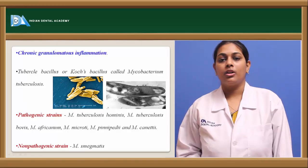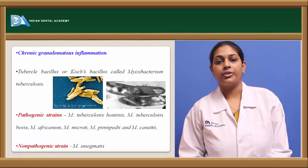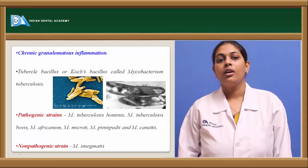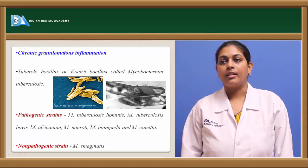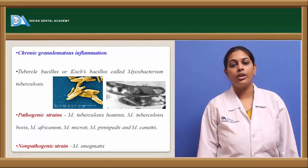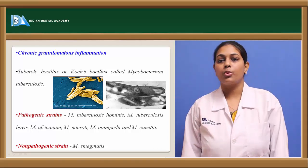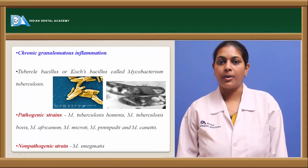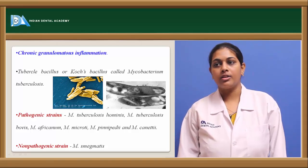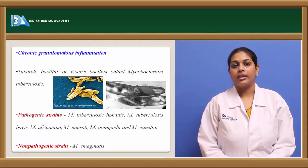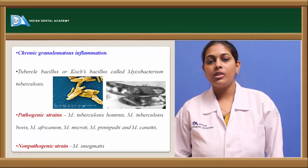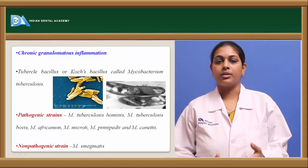Starting with tuberculosis, it is a chronic granulomatous inflammation, most commonly a chronic inflammation. It is caused by bacilli known as tubercle bacilli or Koch's bacilli, since it was identified by a scientist called Koch. The main bacterial name according to bacterial terminology is Mycobacterium tuberculosis.